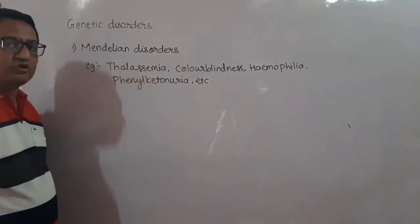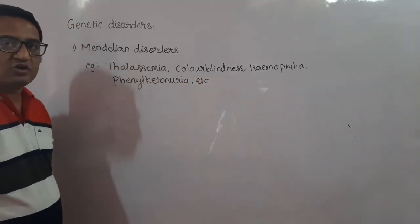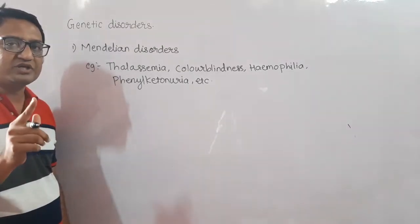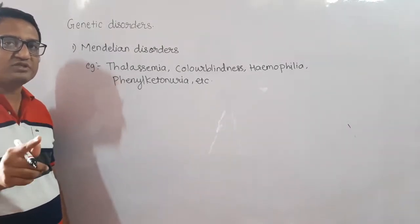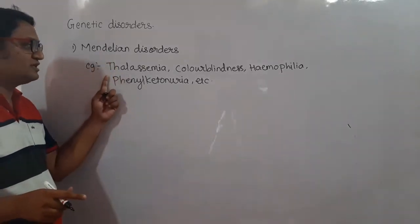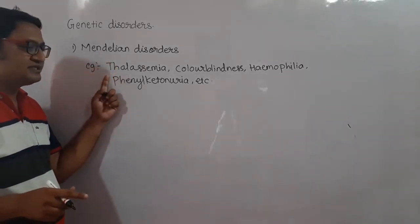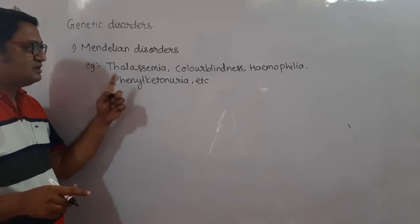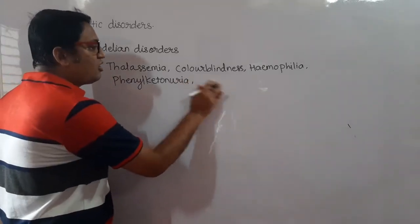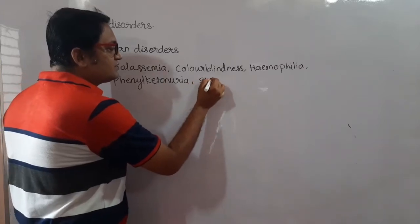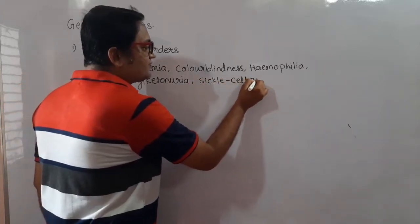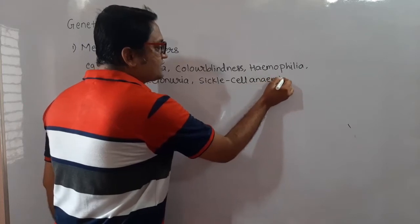To summarize, Mendelian disorders are caused due to mutations of one or more genes. Examples include Thalassemia, Color blindness, Hemophilia, Phenylketonuria, and Sickle cell anemia.